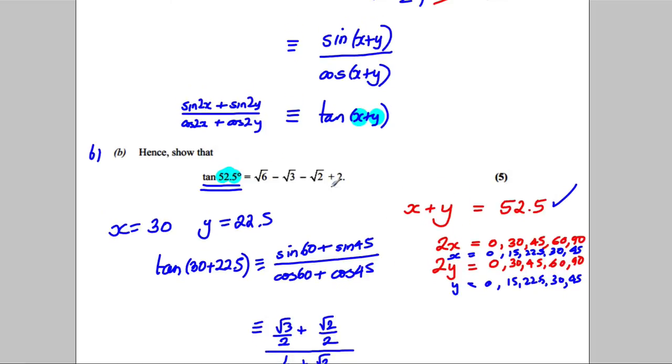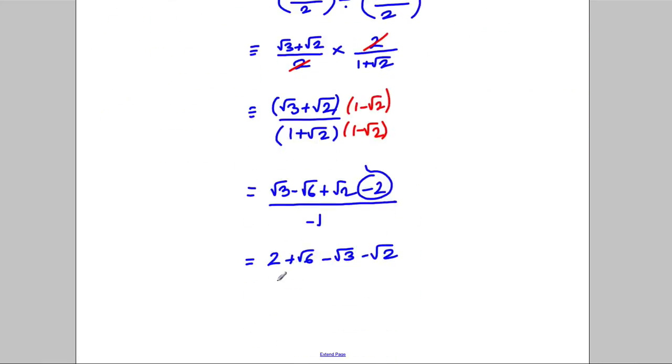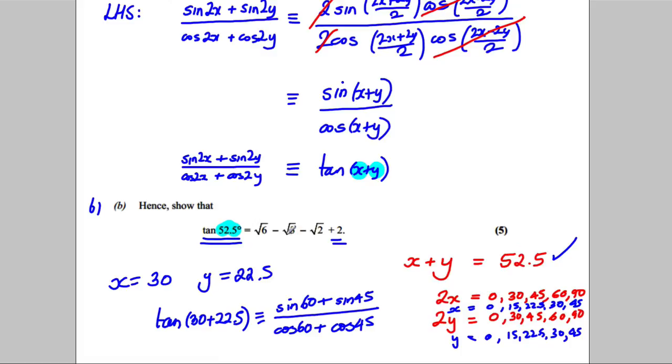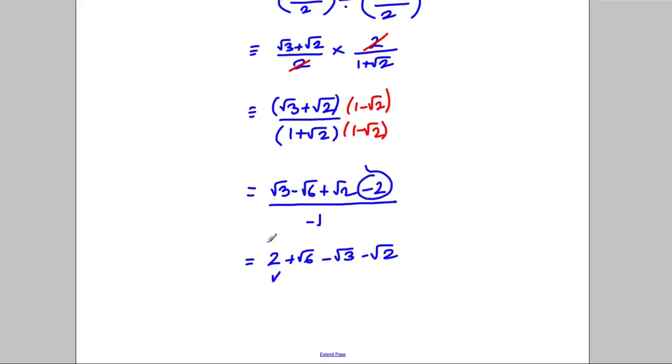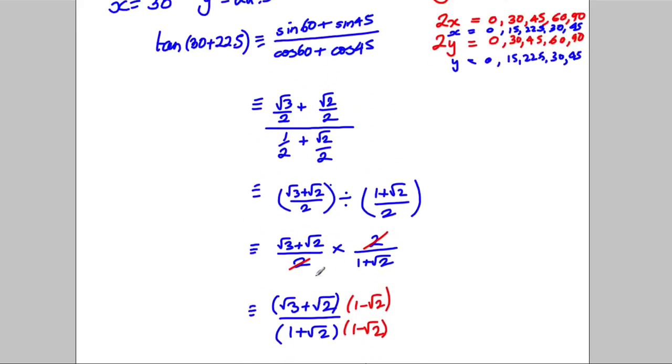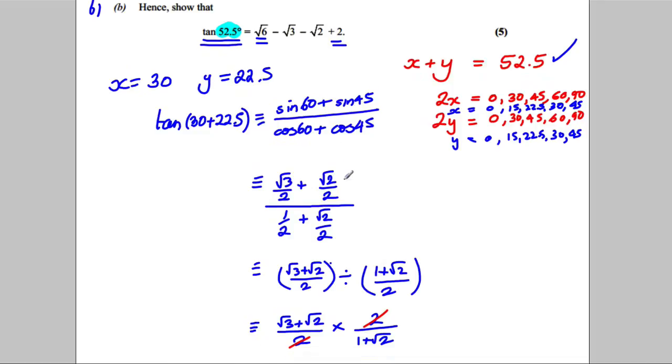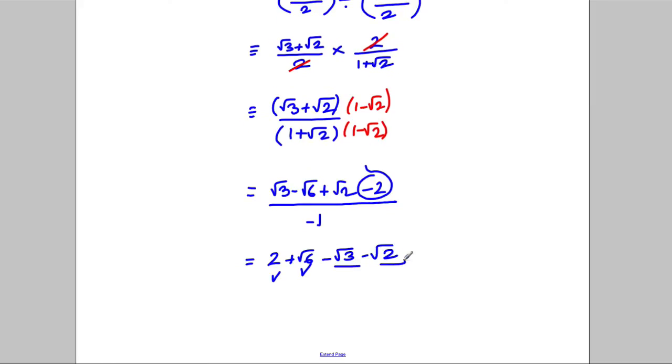And is that what we're trying to show? Well, yes, we've got the plus 2 here, perfect. We've got the plus 6 here, perfect, and we've got the negative root 3 and the negative root 2 here, just as we were asked to show. In fact, just to rewrite it in the way we were asked, and we're done.